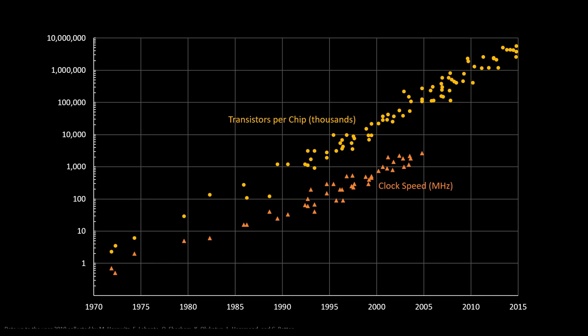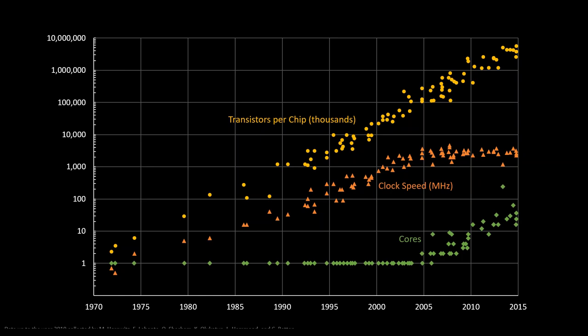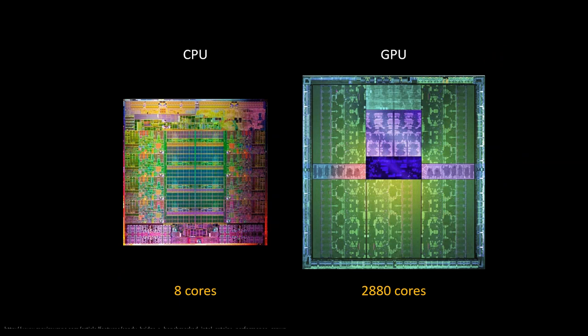One possibility to achieve faster simulations is to just wait. Moore's law says transistor density on a chip doubles approximately every two years, and for a long time buying a newer machine meant faster simulations. That was true until about 2004, when it was no longer feasible to make chips faster due to economic and heat loss problems. Instead, more transistors were used to put more cores on chips, so instead of running one operation at a time, we could run two, four, or sixteen operations simultaneously.